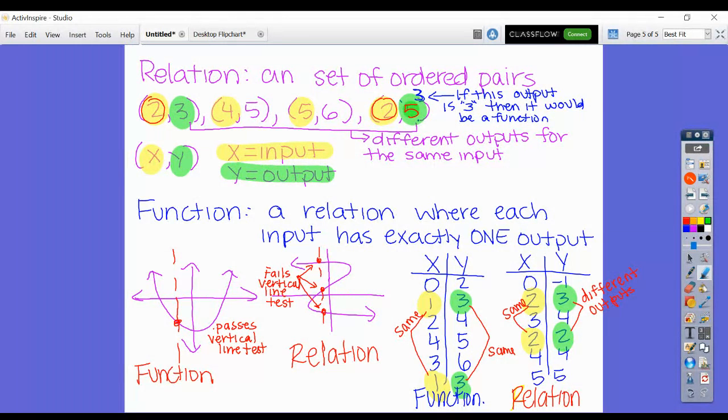Down here I have some examples of functions and relations written out differently. If you're looking at a graph, you can tell if it is a function or a relation because it passes the vertical line test. If you draw a vertical line on a graph and it passes through your graph one time, then it passes the vertical line test and it is a function. If you draw the vertical line, like the zigzag one, and it touches it more than once—this one touches it three times—it fails the vertical line test and it is just a relation.